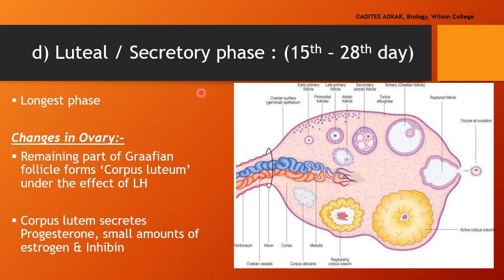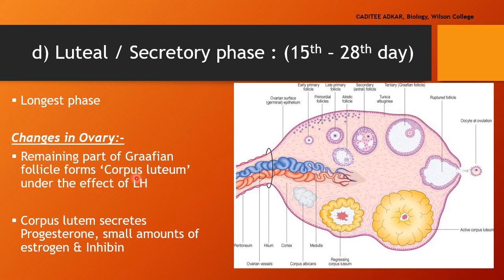The longest phase in the cycle is the luteal or secretory phase, beginning from day 15 and continuing to day 28. In the ovary, as the Graafian follicle has ruptured and released the secondary oocyte, the remaining part of the Graafian follicle converts itself into a yellow-colored body known as the corpus luteum — corpus meaning body, luteum meaning yellow. The formation of corpus luteum occurs under the effect of the luteinizing hormone released by the anterior pituitary. Once formed, the corpus luteum secretes hormones like progesterone, small amounts of estrogen, and inhibin.